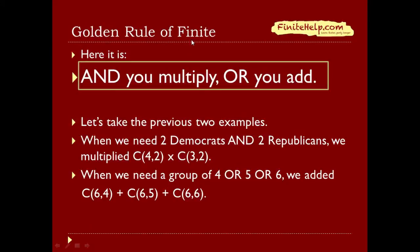Here is the golden rule of counting: AND — you multiply; OR — you add. Looking at the two previous examples: when we needed two Democrats AND two Republicans, we multiplied — C(4,2) times C(3,2). When we needed a group of four OR five OR six, we added — C(6,4) plus C(6,5) plus C(6,6).